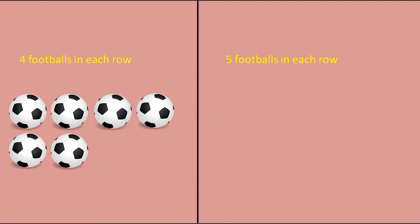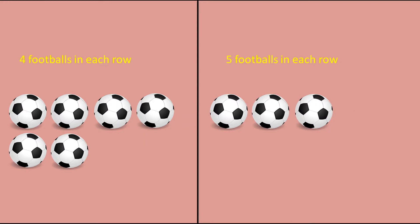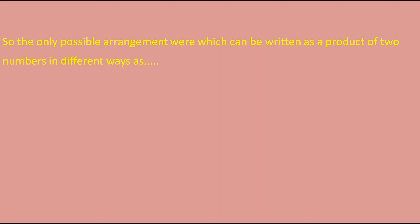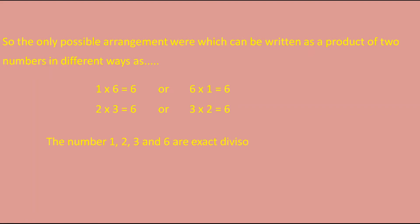He also tried five footballs in each row, but that didn't work either. So the only possible arrangements are: 1 × 6 = 6, or 6 × 1 = 6, and 2 × 3 = 6, or 3 × 2 = 6. So these four numbers — 1, 2, 3, and 6 — are the exact divisors of six, and these numbers are called the factors of the number.